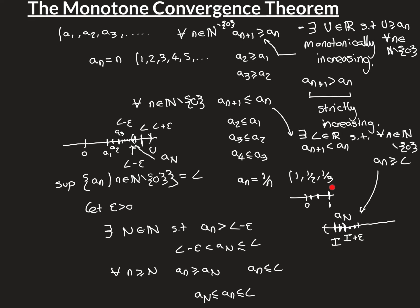The harmonic progression 1/n is an example of a monotonically decreasing sequence — in fact strictly decreasing. The infimum of all its terms is 0, and indeed 0 is the limit of this sequence.